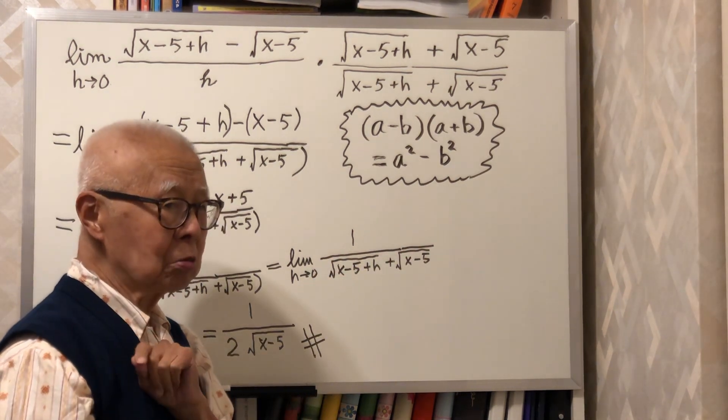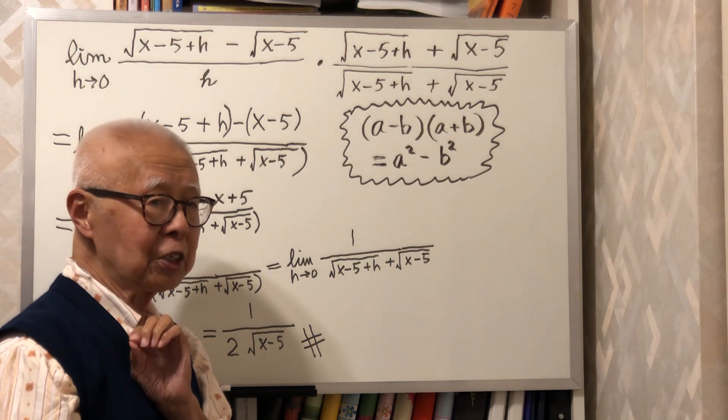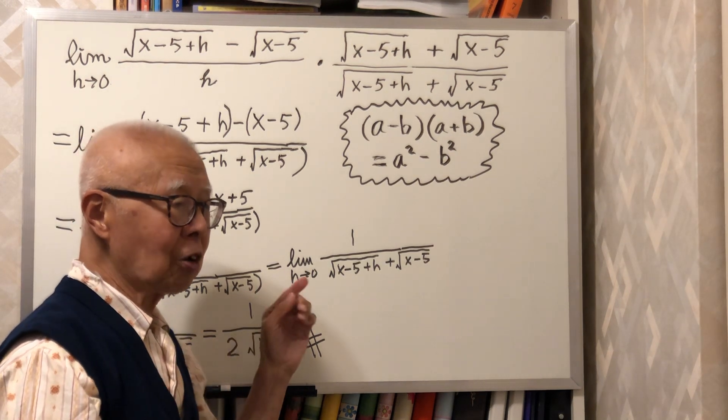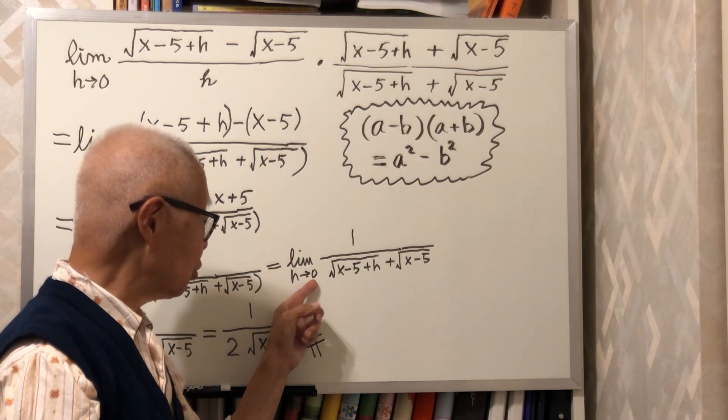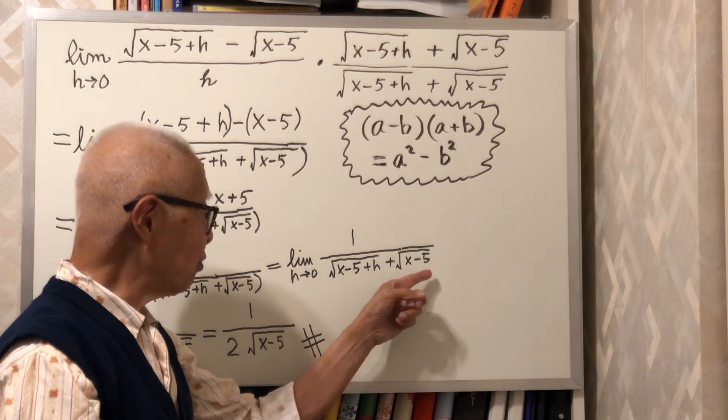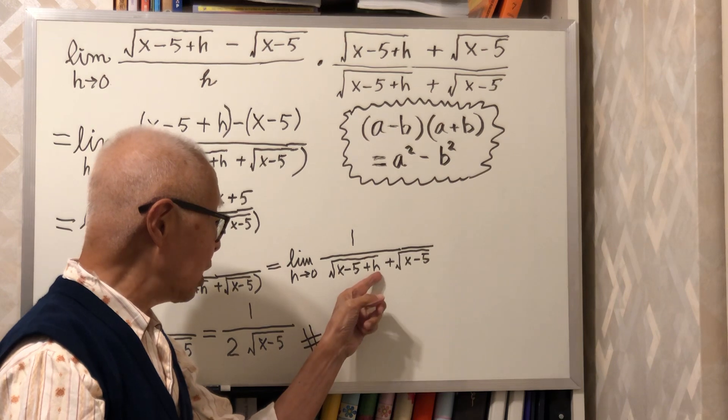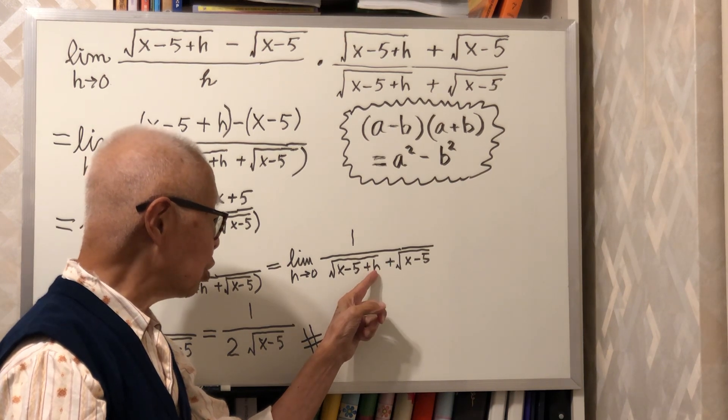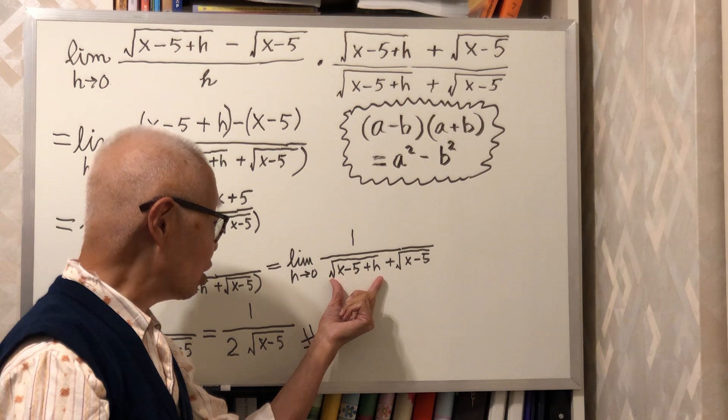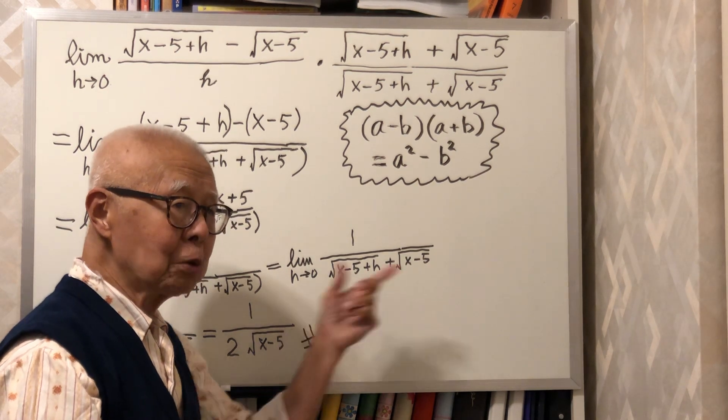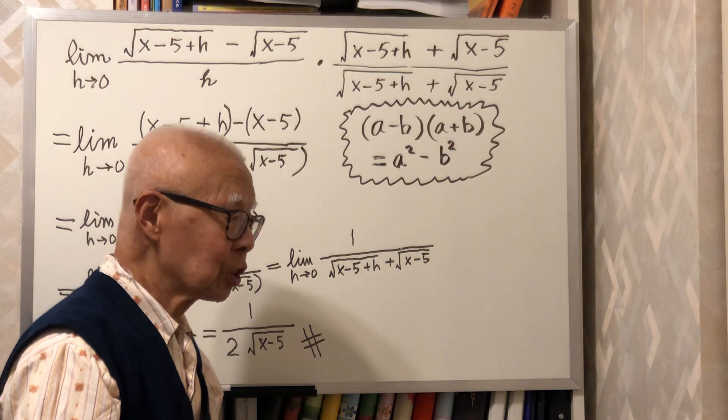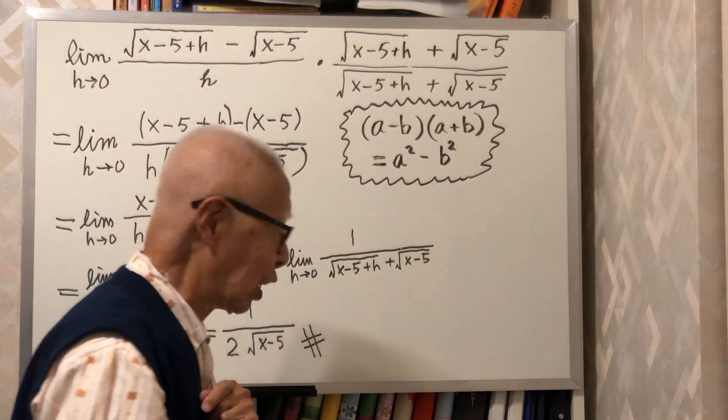Now I am ready to do the limit operation. The limit is h goes to 0. So I have an h in the denominator, I make this h equal to 0. Then this becomes (x - 5). The two terms are identical: square root of (x - 5).